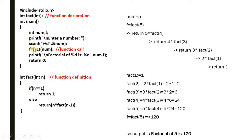When returning something from a function, in the calling function you assign it to your variable — so f = fact(num). fact(num) will return some value stored in f. It goes to the function definition: int fact(int n), where num is the actual parameter and n is the formal parameter. When n == 1, it returns 1.